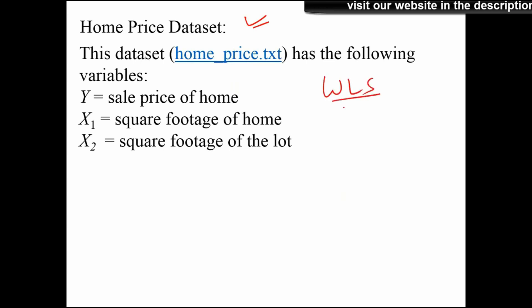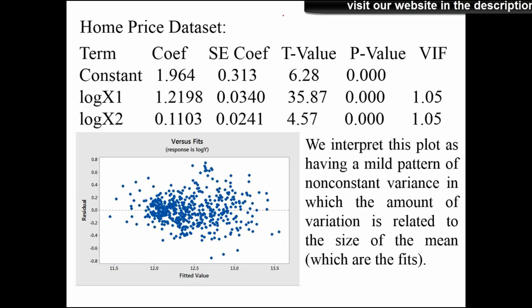Here is a house price example. y is the sale price of a home, x1 is the square footage of the home, and x2 is another feature of the house. Using x1 and x2 we need to find how they relate to the price. We run ordinary least squares and get the coefficient estimates, standard deviations, t-values, and p-values.